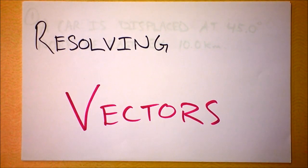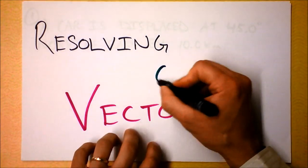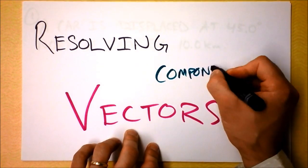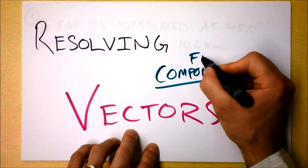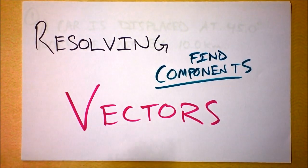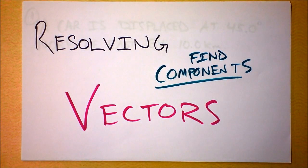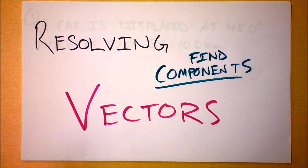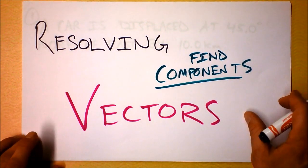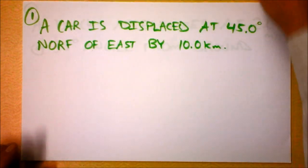Resolving vectors is about finding components — we want to find out what each vector is really made of. We want to get the components of the vectors in question. Resolving vectors is an important step when working with vectors because if you can resolve vectors, you can ultimately add them. So this is phase two in our adding general vectors lesson, and today I want to show you how to add vectors generally, and how to resolve vectors in particular.